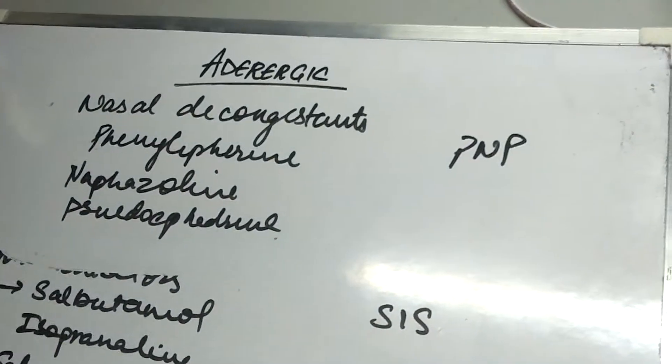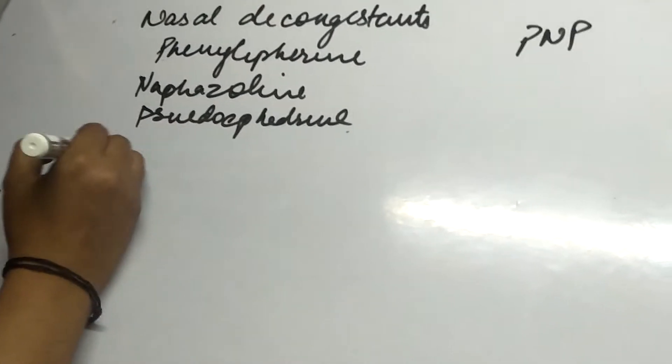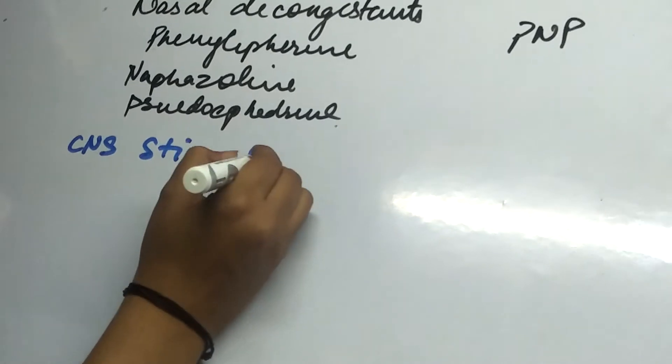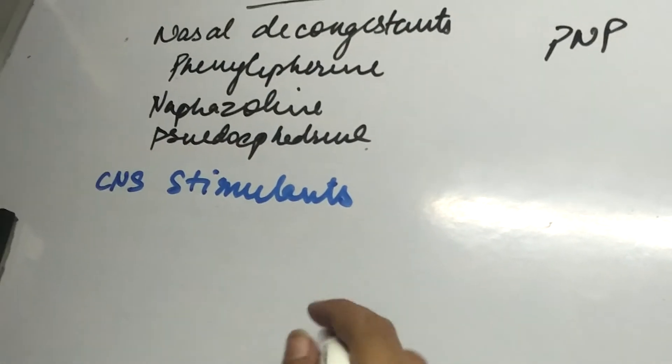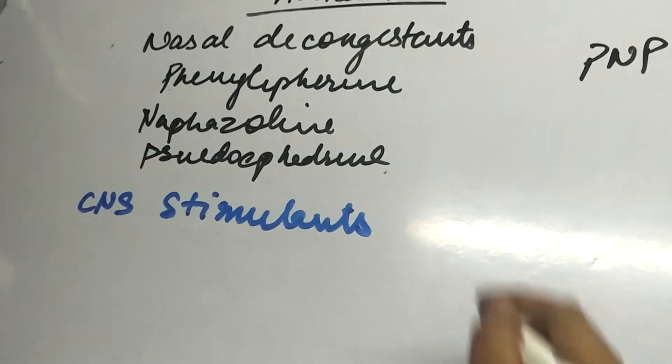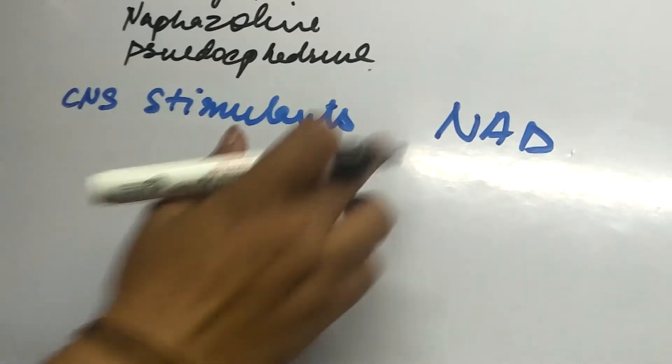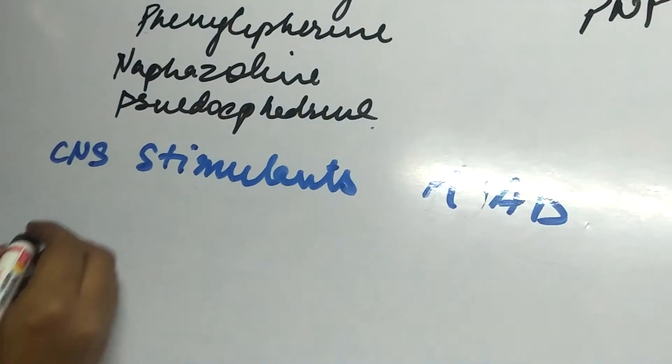Next is CNS stimulants. The mnemonic can be MAD. From M we have methamphetamine, amphetamine, and dexamphetamine.